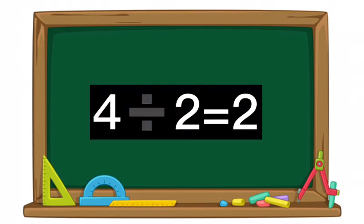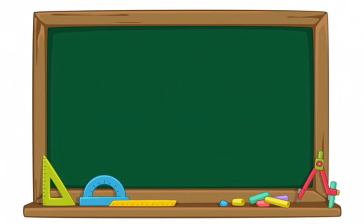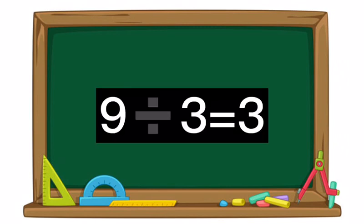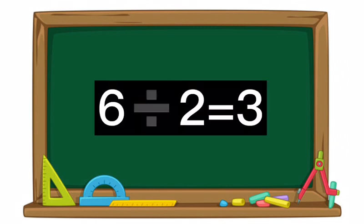Four divided by two equals two. Ten divided by five equals two. Nine divided by three equals three.